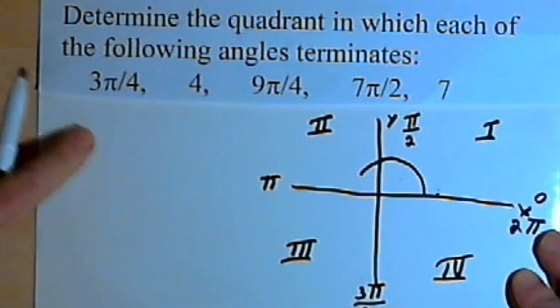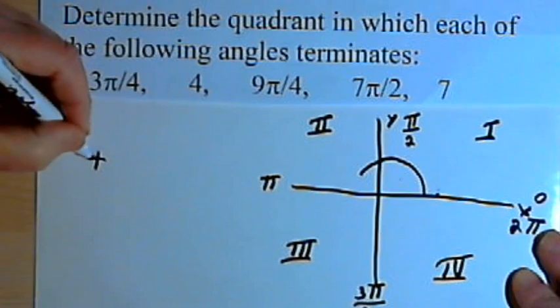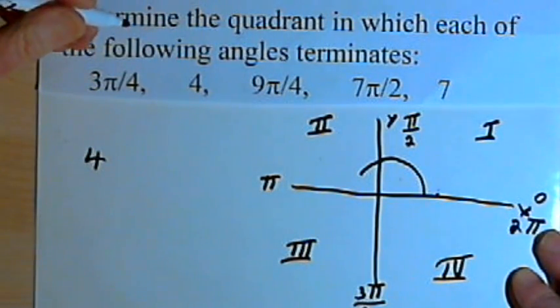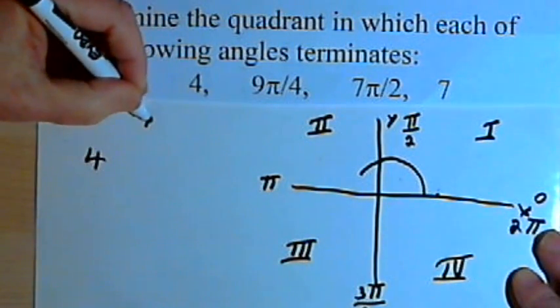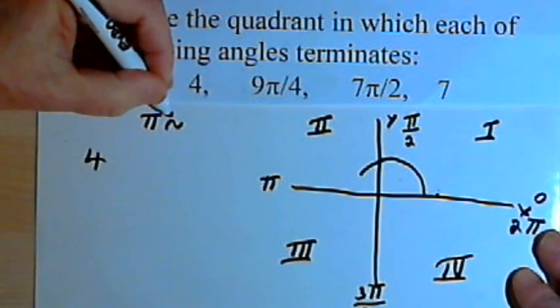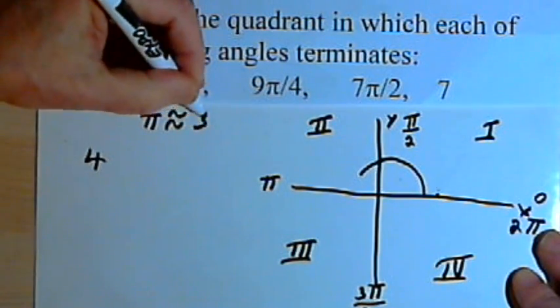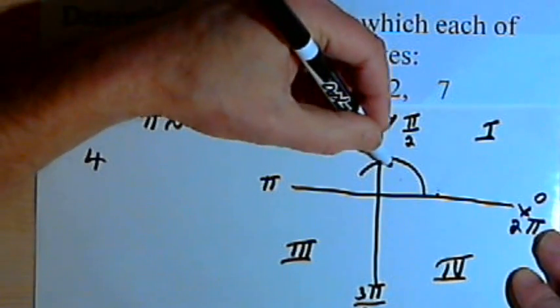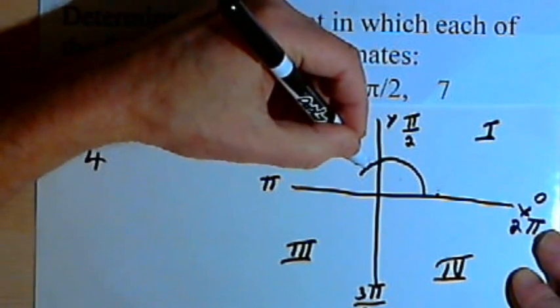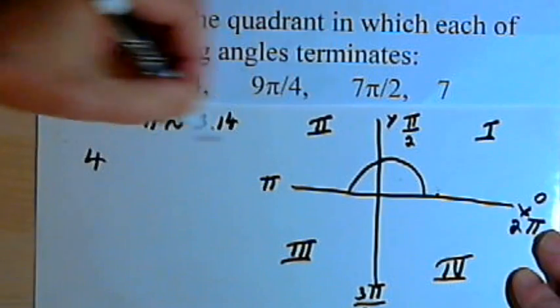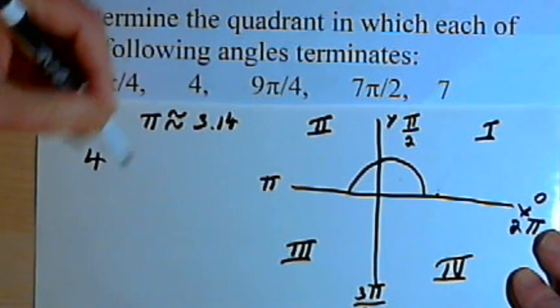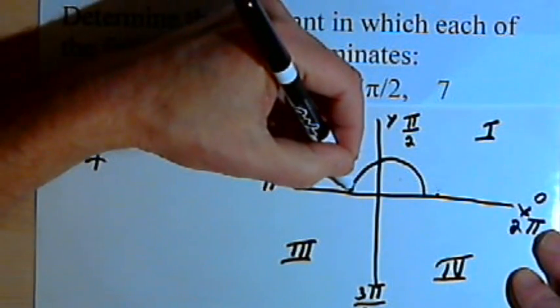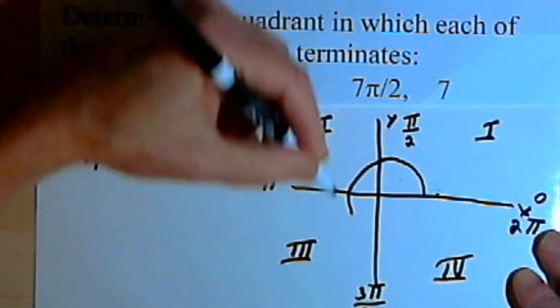Now for the next problem, I'm just given 4—in other words, 4 radians. So what I have to do here is remember that π equals approximately 3.14. So if we go through the first and the second quadrants, that will take us 3.14 radians. I want 4, so I'm going to end up in the third quadrant.